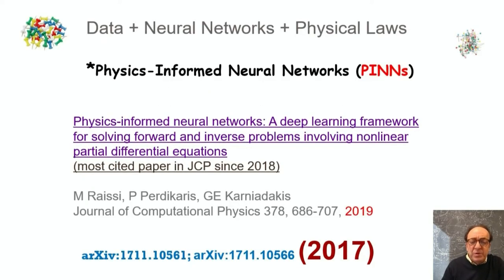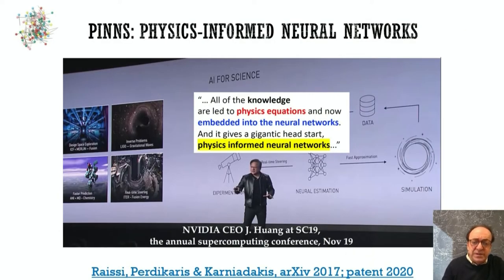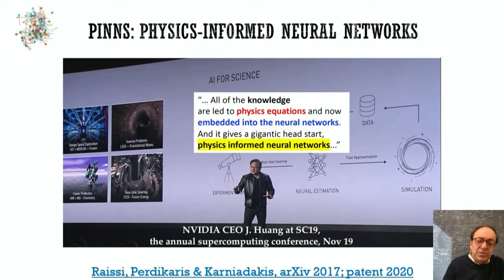The paper that we first wrote appeared in 2017, and since then it has been adopted in many different communities, from medicine to engineering to even astrophysics. It was also adopted by industry. At the 2019 Supercomputing Conference, Jensen Huang, the CEO of NVIDIA, gave a 15-minute talk about AI for science, specifically talking about physics-informed neural networks. My postdoc Maziar Raissi worked with them, and now NVIDIA has a whole division working on this topic.